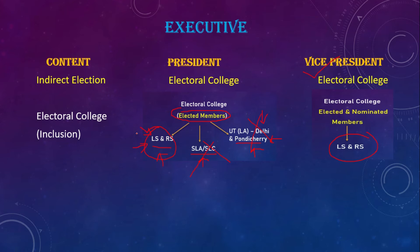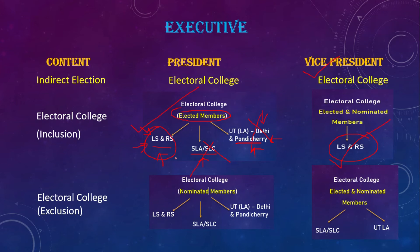Both elected and nominated members are included. This is the inclusion. The nominated person will come under inclusion. For Delhi and Pondicherry, the nominated person is included. The nominated person helps choose the President.